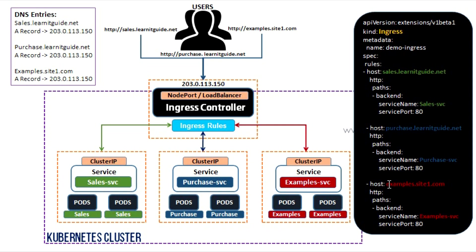In a single Ingress resource file, you can manage multiple domain inbound traffic. You can manage SSL, multiple domains, and name-based virtual hosting. This is the Ingress rules model.